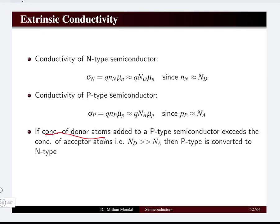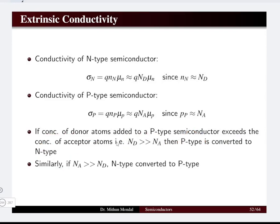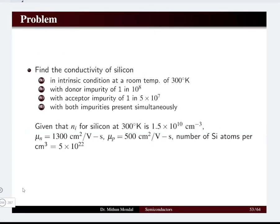If the concentration of donor atoms added to a p-type semiconductor exceeds the concentration of acceptor atoms — that is, nd >> na — then we can convert the p-type to n-type. P-type and n-type semiconductors can be converted from one form to the other by controlling the number of acceptor and donor impurity atoms. Similarly, to convert n-type to p-type, we need the number of acceptor impurity atoms to be much greater than the donor impurity atoms.